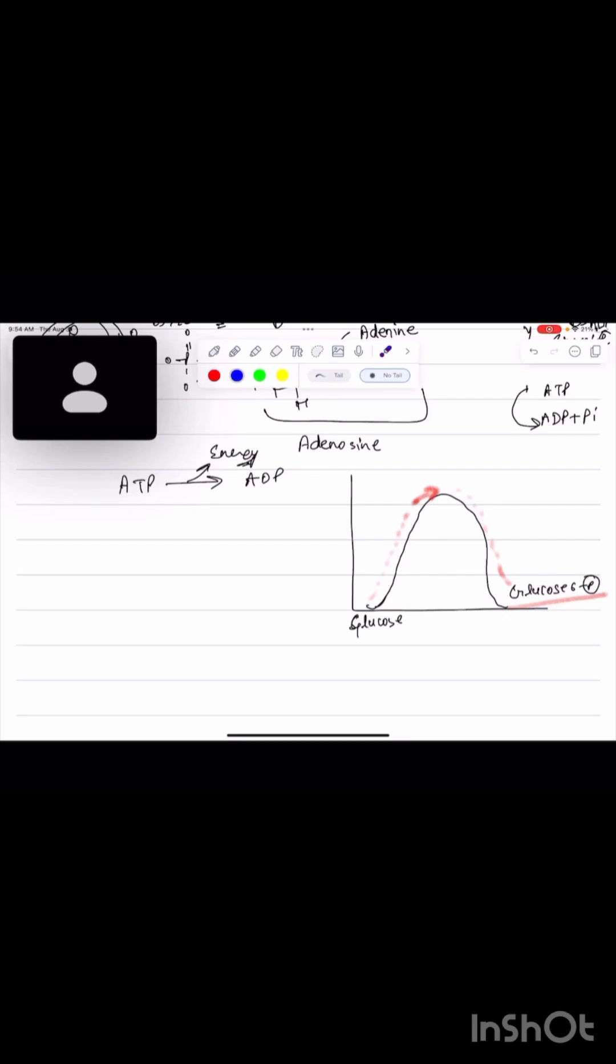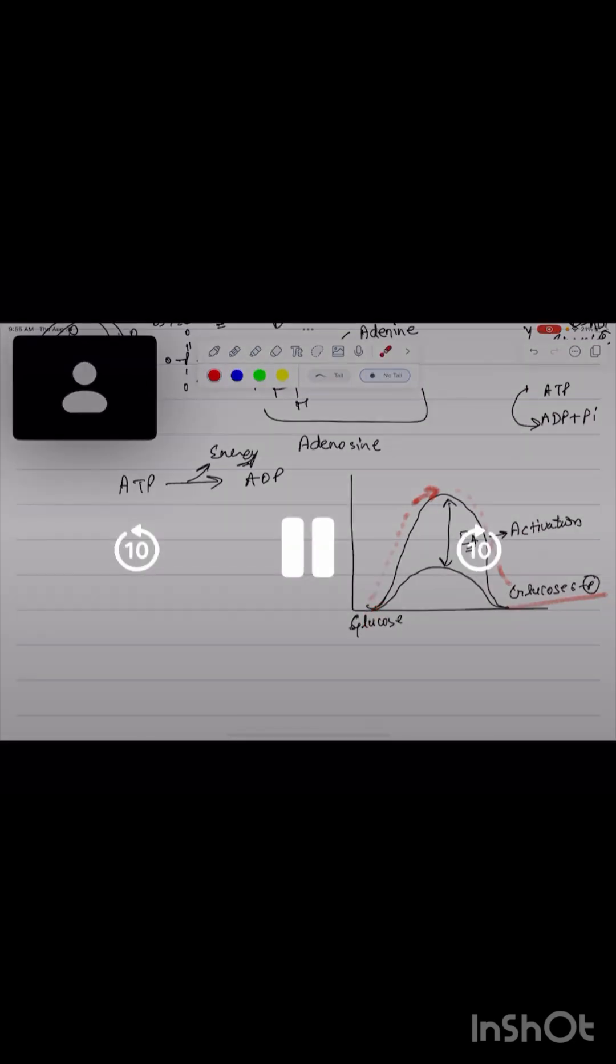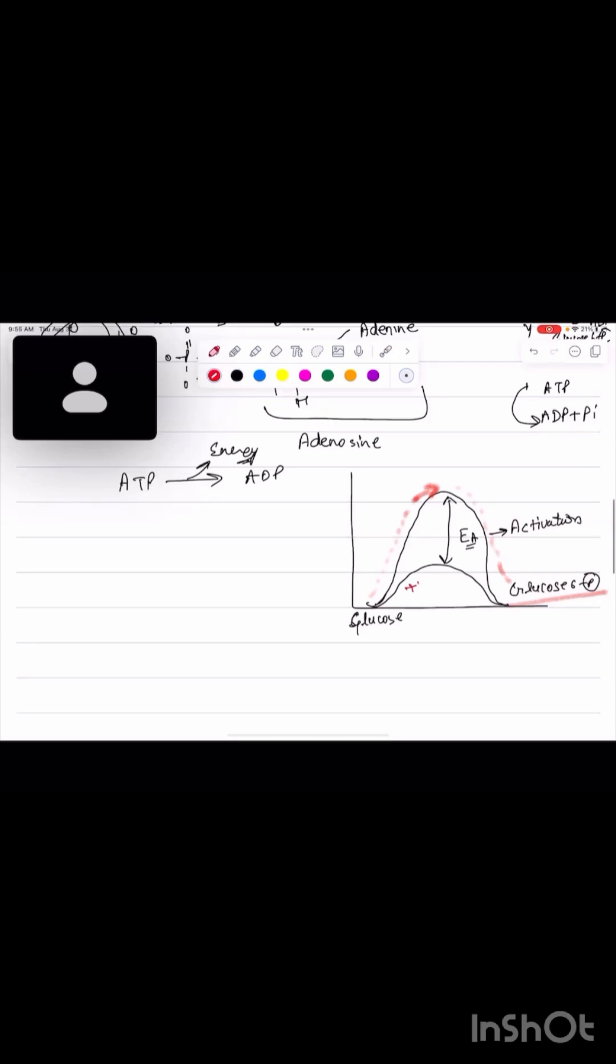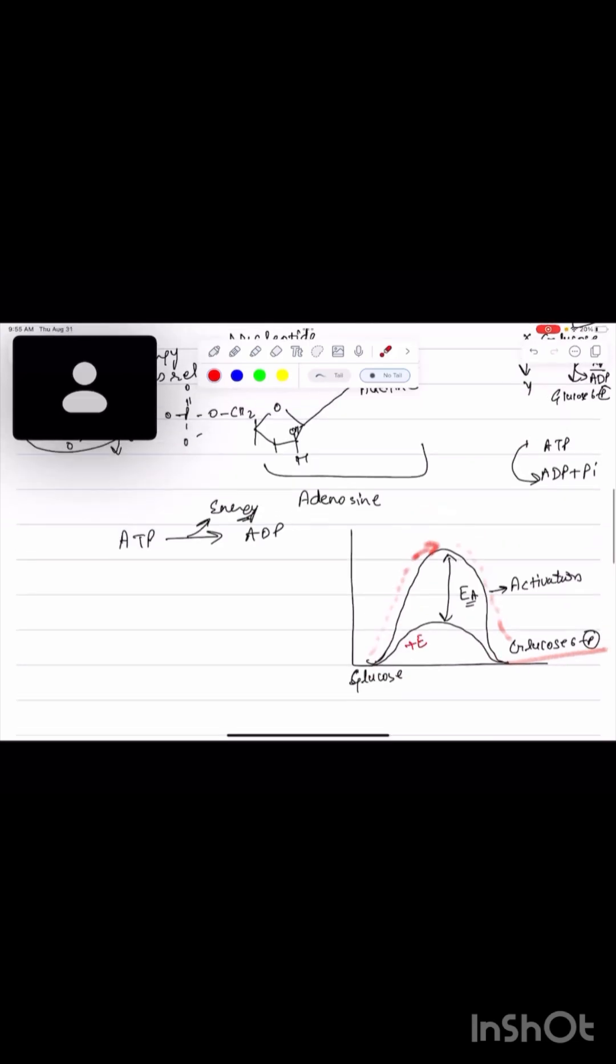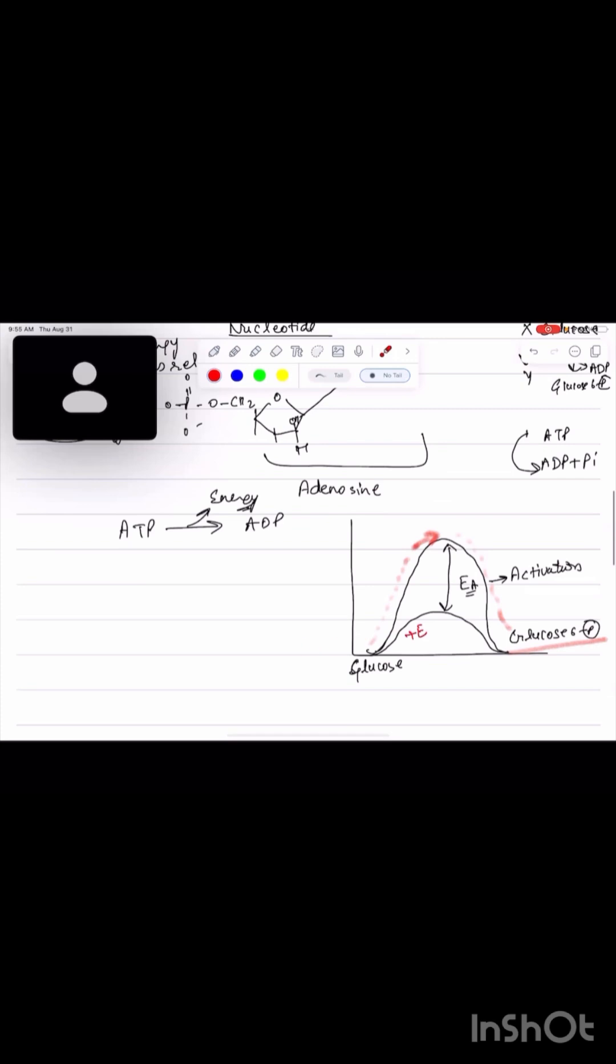We have a catalyst called hexokinase, the enzyme. It will lower down the activation energy barrier. In presence of enzyme, this glucose will convert to glucose-6-phosphate very quickly. This enzyme is acting as a source for conversion.